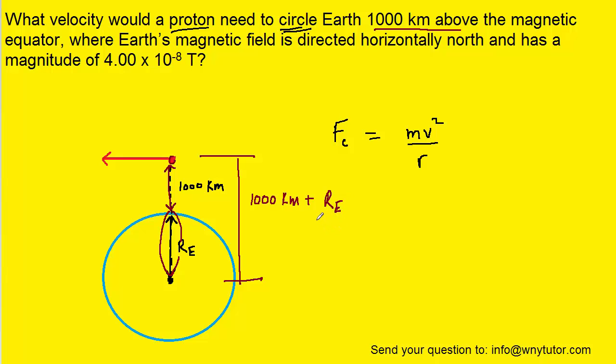Now, in our textbook, if we look up the radius of the Earth, we're going to see that it's approximately 6.38 times 10 to the sixth meters. 1,000 kilometers is the same thing as 1,000 times 10 to the third meters. So if we add those two together, we should get 7.38 times 10 to the sixth meters. That's the total radius that we're going to be plugging into the formula.